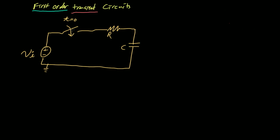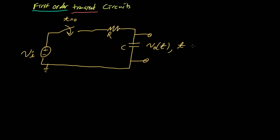But right at time equals zero, this switch is going to close. When that switch closes, the voltage source is going to start driving the circuit. We want to know: what is the output voltage across this capacitor going to look like as a function of time for all time greater than zero? That is what we are trying to figure out with this first order transient problem.